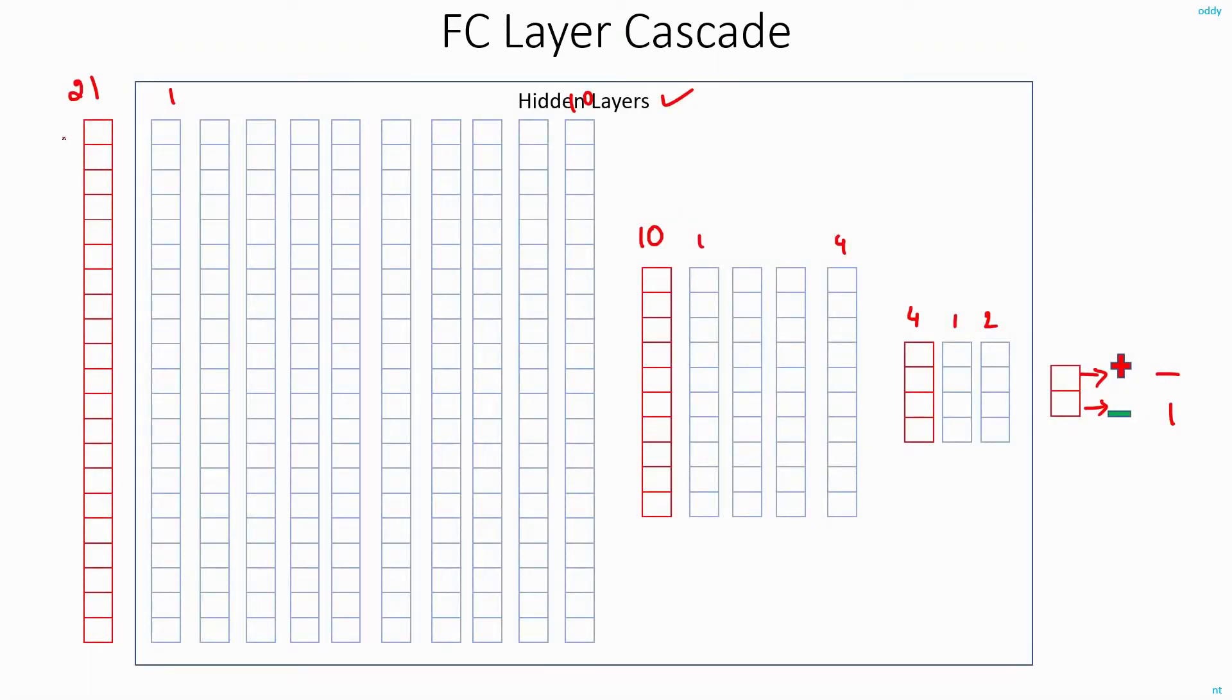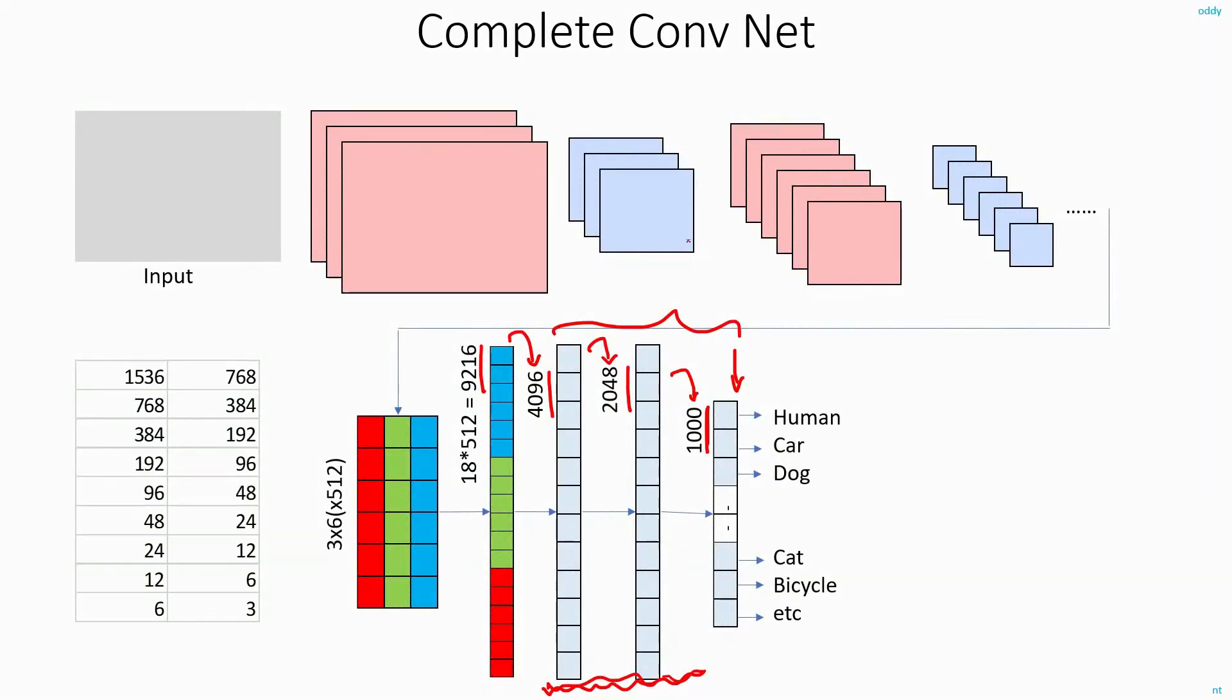These layers in between are called hidden layers. Same thing can be seen here. Because from the outside, it looks like you gave this big array as input and you just got array of size 2 as output. But in fact, in between you have so many other layers - these layers are all hidden.